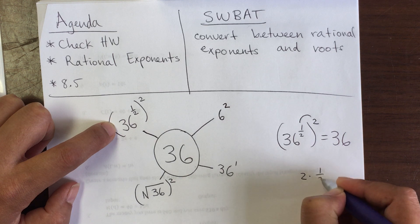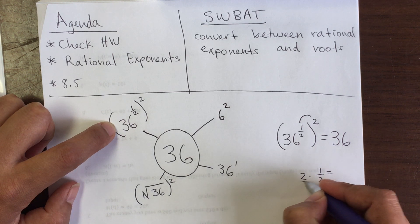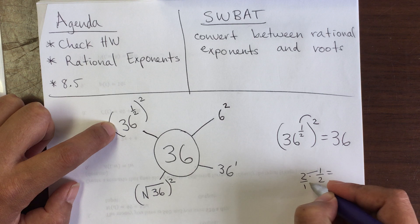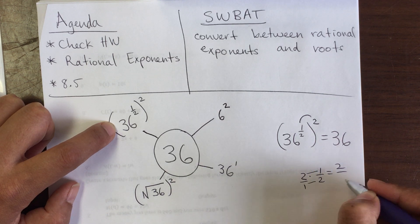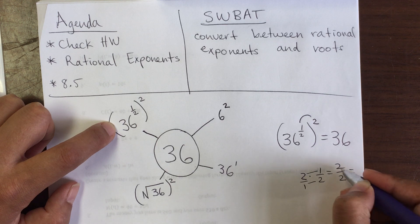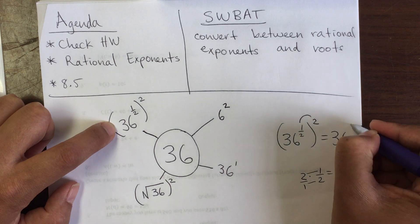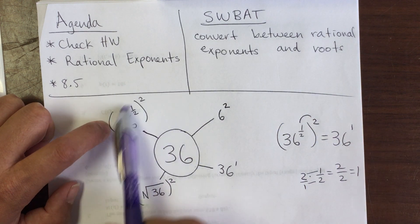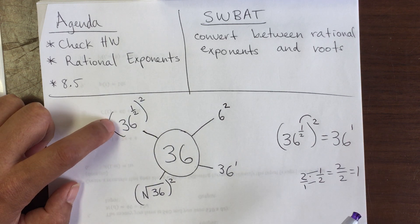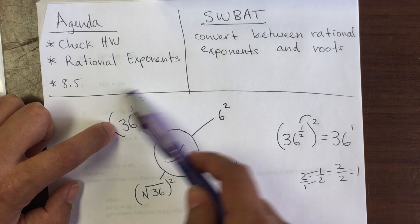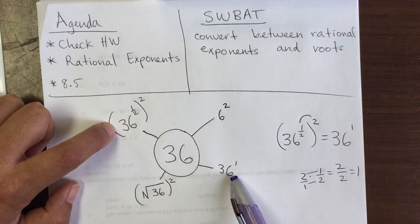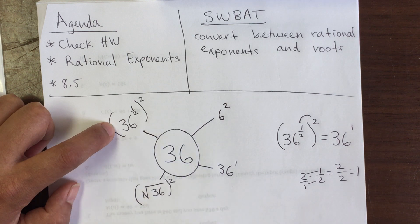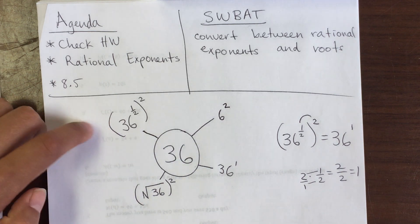Two times one half: we put it over one, multiply straight across — 2 times 1 is 2, 1 times 2 is 2, and 2 divided by 2 is 1. So this expression means 36 to the first power, which is just 36.